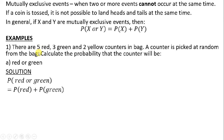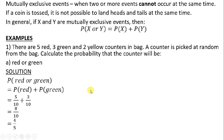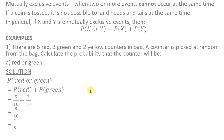There are 5 red counters, so our favorable outcome is 5. The probability of picking red is 5 over 10, plus the probability of picking green is 3 over 10. Since the denominator is the same, we add the numerators: 5 plus 3 gives us 8 over 10. Taking this to its lowest terms gives us 4 over 5.